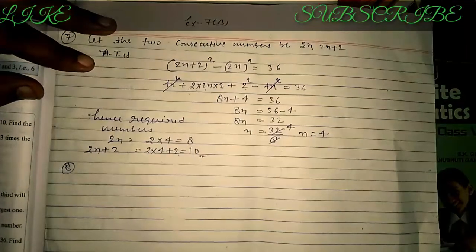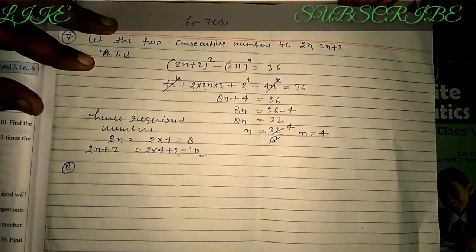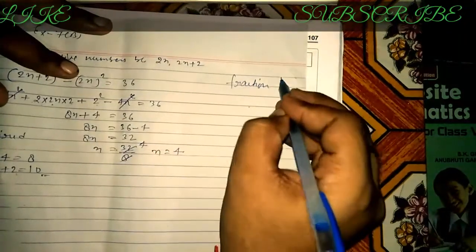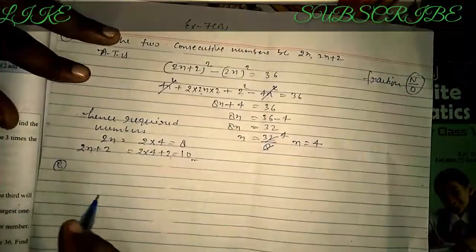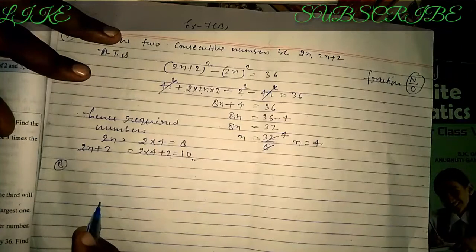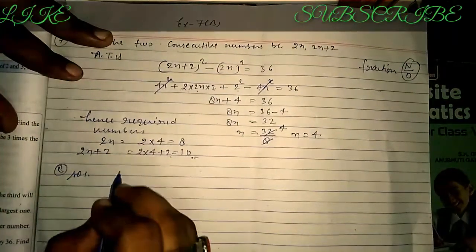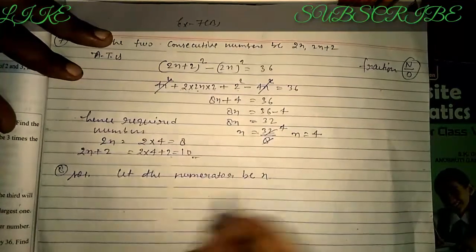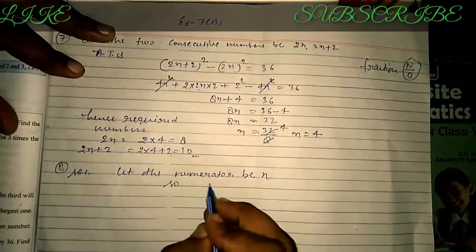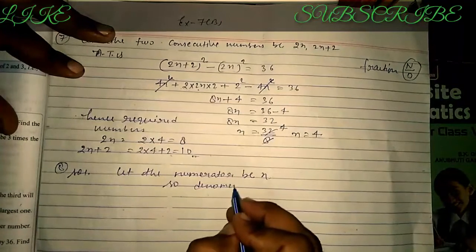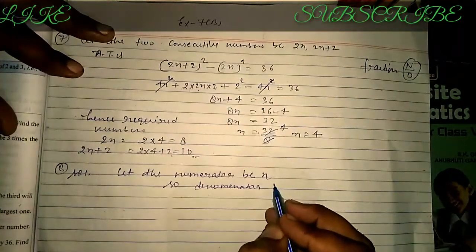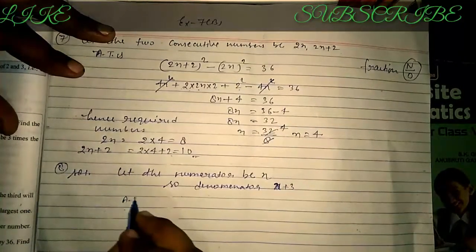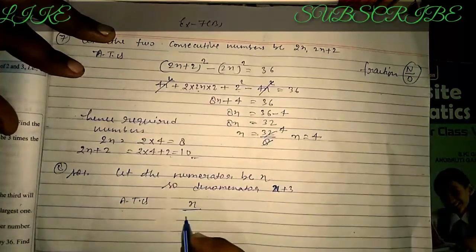First understand the language clearly. Fractions always have a numerator and denominator form. It is said the denominator of the fraction is 3 more than the numerator. So let the numerator be x, which means the denominator will be x + 3.